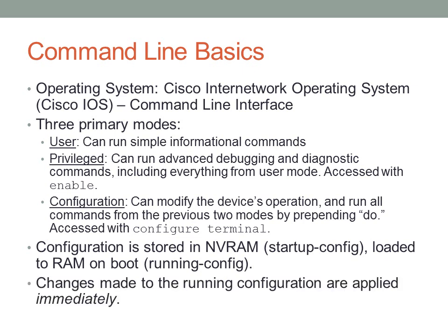Changes made to the running configuration are applied immediately, so be very careful when making changes in config mode. If you're configuring a device over the console, you can usually access it again and undo a change. However, a very common scenario is someone administering a switch or router makes a change that causes them to lose connectivity to that device, leaving no way to reverse changes — the only recourse is a console cable or rebooting the device and hoping the changes weren't written to memory.